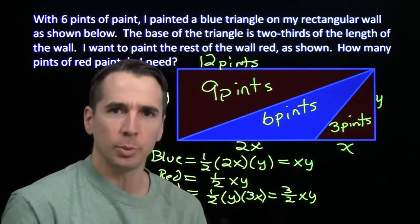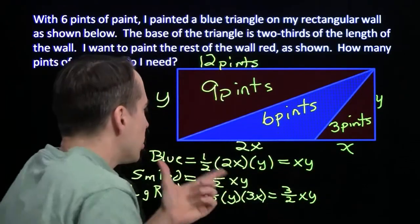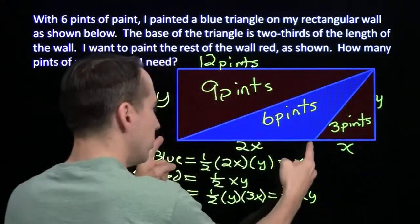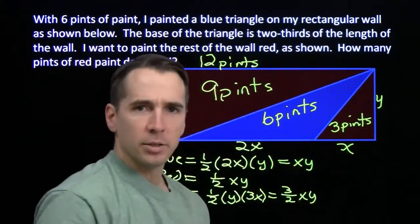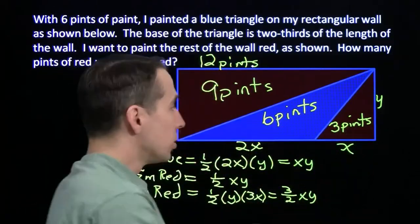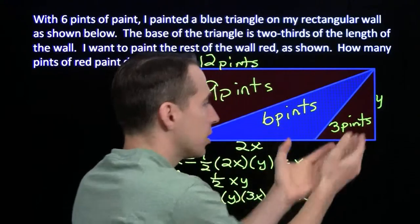We didn't need all this algebra to tell us that. We could have just thought about how area of the triangles work. We have the same altitude, the base of the blue is double the base of the red, so the area of the blue is double the area of the red. So we could have gone immediately from 6 pints to 3 pints.